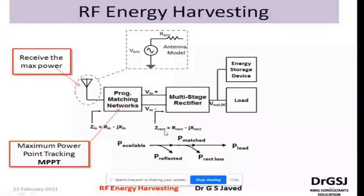Energy harvesting efficiency can be analyzed by assuming that the impedance at the input of the matching network is given as Z_in = R_n + jX_in, where Z_in is the impedance, R_n is the resistance, and X_in is the reactance. Our aim is to reduce X_in to zero. This signal can then be fed into the rectifier, whose effective impedance can be expressed as R_rect minus jX_rect — that is, resistance minus the reactance value.